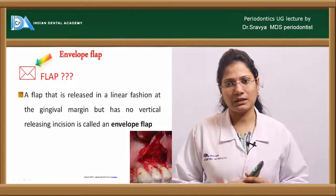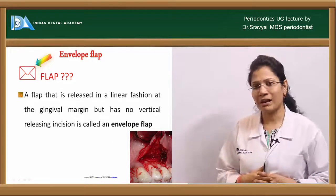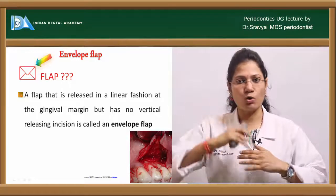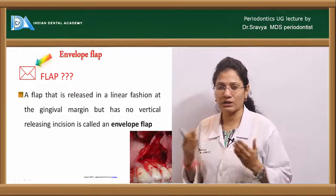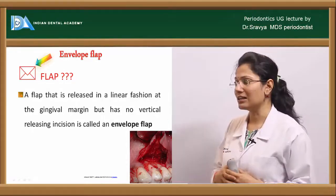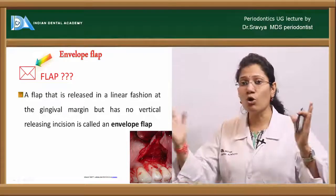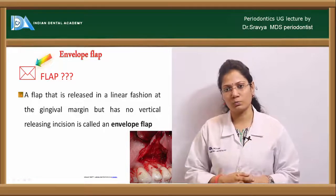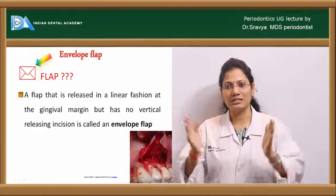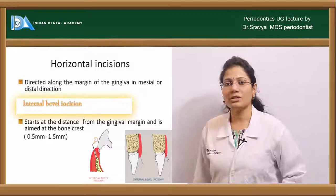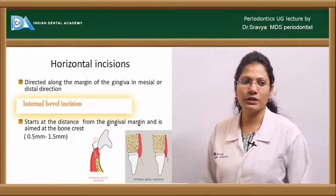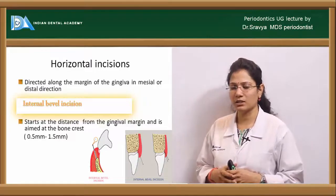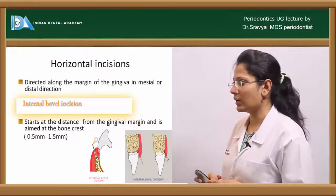Coming to the different types of flap techniques: you have your envelope flap. The envelope flap, as you can see from the picture, is just like an envelope with one-side opening — it is released in a linear fashion at the gingival margin but has no vertical releasing incisions. This technique includes only your horizontal group of incisions. Now, the first horizontal incision is the internal bevel incision, starting about 0.5 to 1.5 millimeters away from the gingival margin towards your alveolar crest.